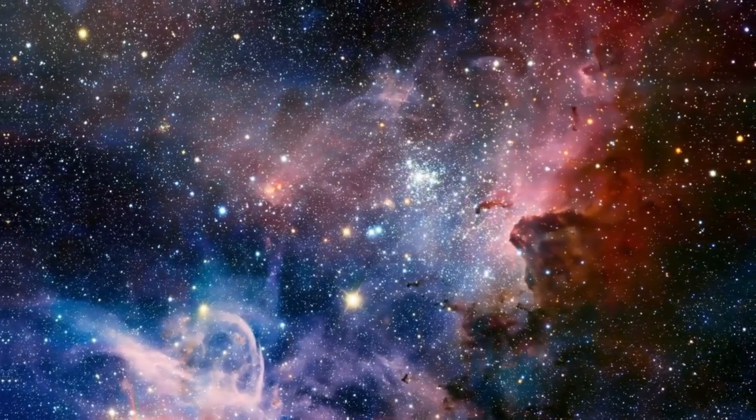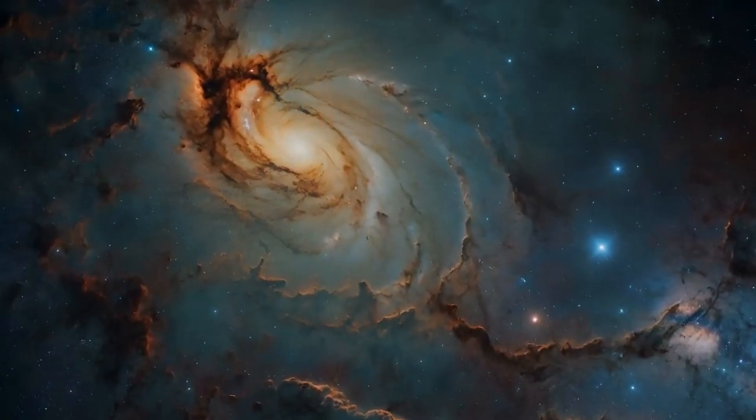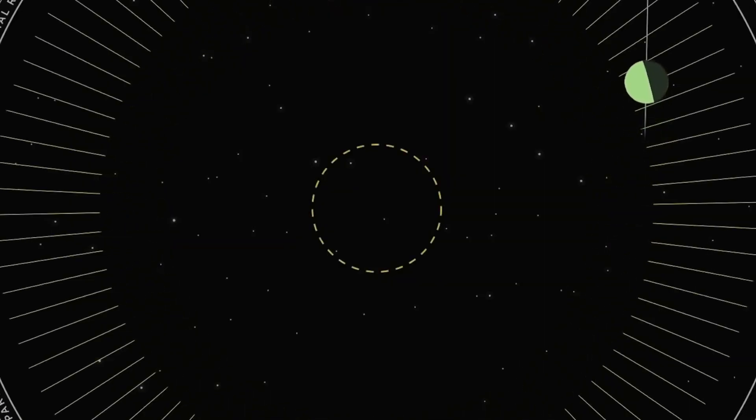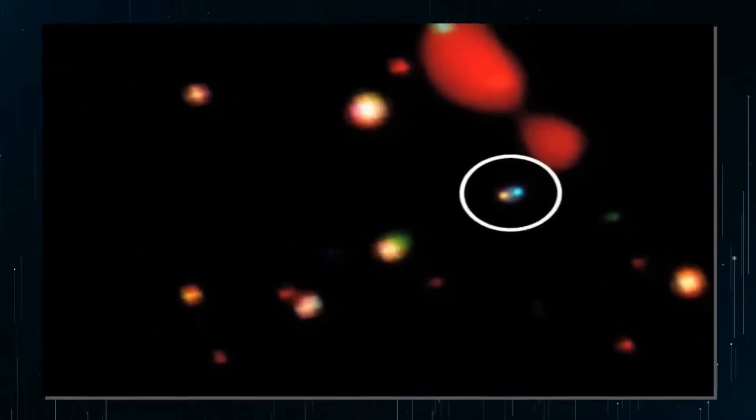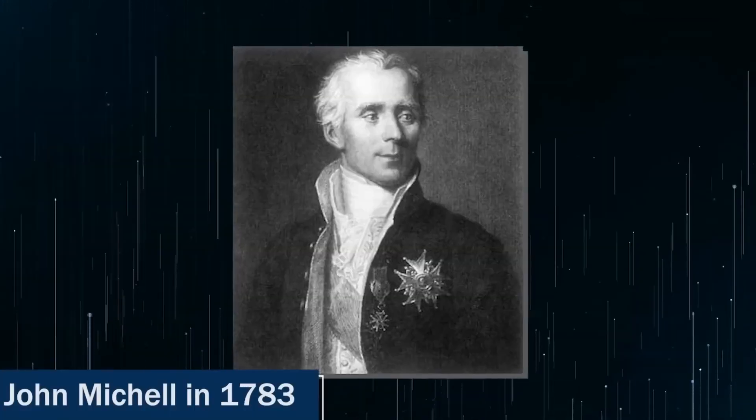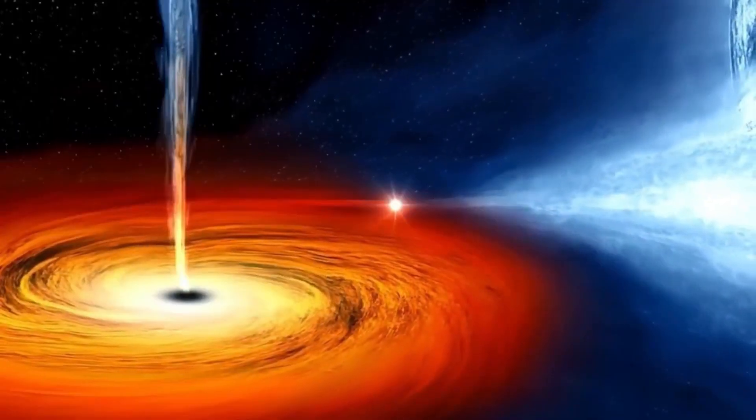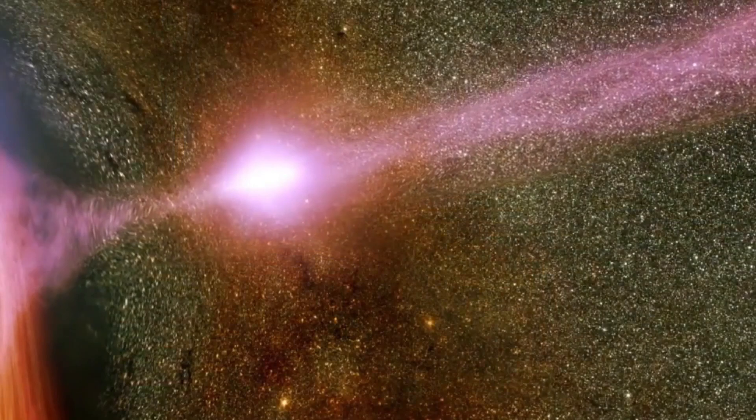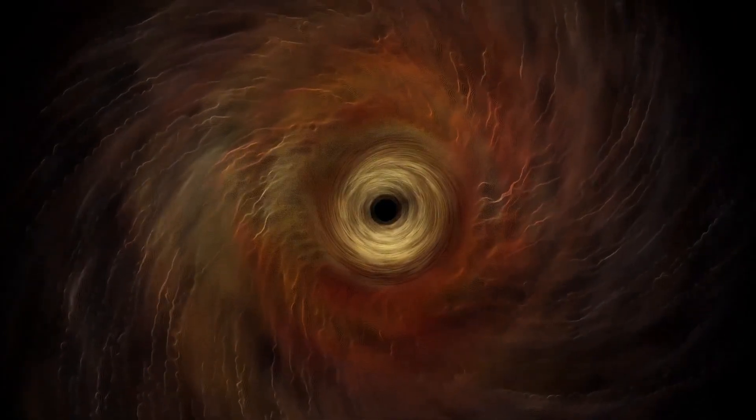However, when a massive object, such as a galaxy cluster, lies between the distant galaxy and the observer, the gravitational field of the intervening object acts as a natural telescope. It bends and magnifies the light from the distant galaxy, making it appear brighter and larger than it would otherwise. This magnification effect allows astronomers to study the properties of these distant galaxies in much greater detail, providing insights into the early universe's formation and evolution.